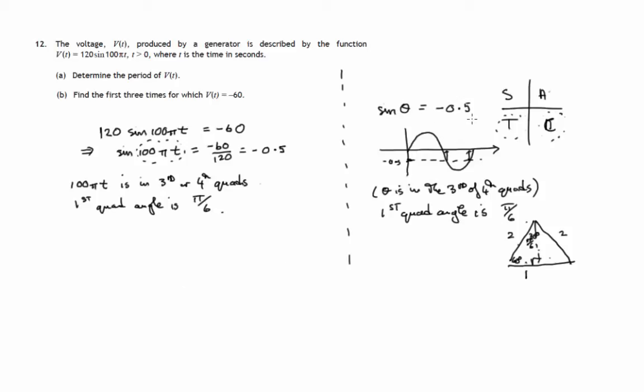And if we were just doing sine theta equals negative 0.5, I would then at this stage say, well, the third quadrant angle is pi plus pi upon 6. And the fourth quadrant angle would go all the way around to 2 pi and subtract pi upon 6. You can see that on the graph, that there's pi and we're adding pi upon 6. There's 2 pi and we're subtracting pi upon 6. So the angle, which remember we said it's 100 pi t, will be equal to pi plus pi upon 6 or 2 pi minus pi upon 6.